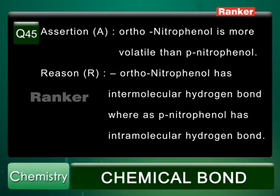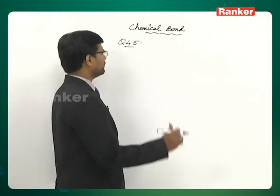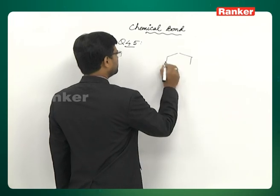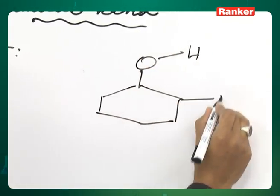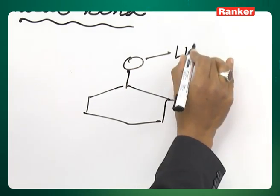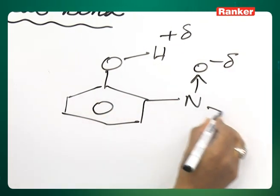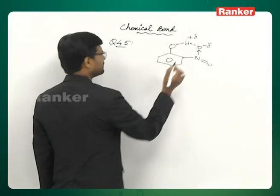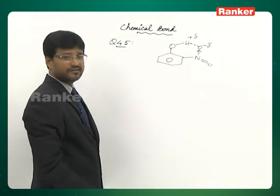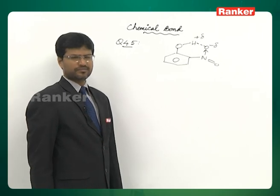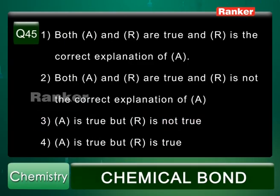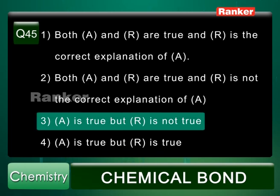Question number 45: Ortho-nitrophenol is more volatile than para-nitrophenol. Reason: ortho-nitrophenol has intramolecular hydrogen bond, whereas para-nitrophenol has intermolecular hydrogen bond. The statement in the reason given is reversed — it says ortho has intermolecular and para has intramolecular, which is incorrect. Assertion A is true but reason R is not true. Correct answer is the third option.